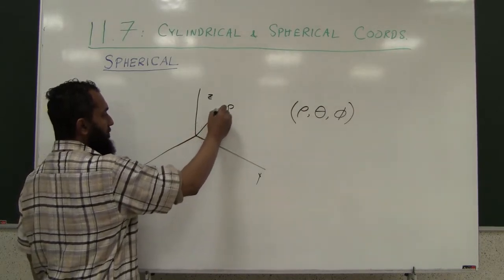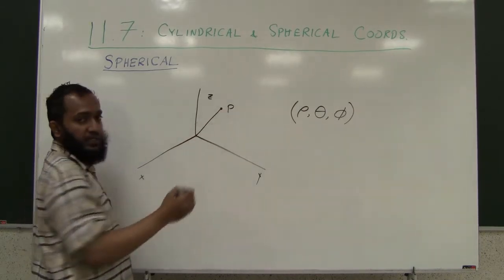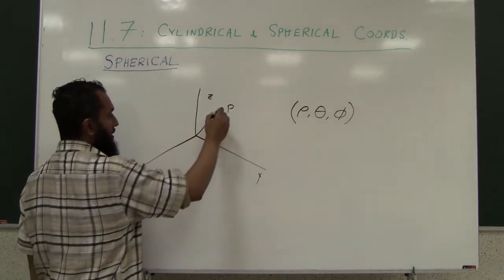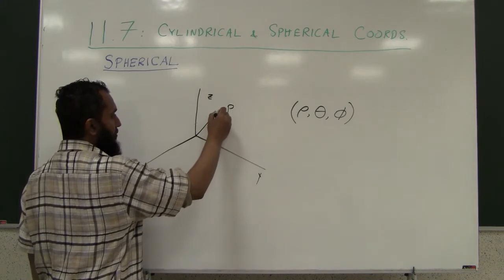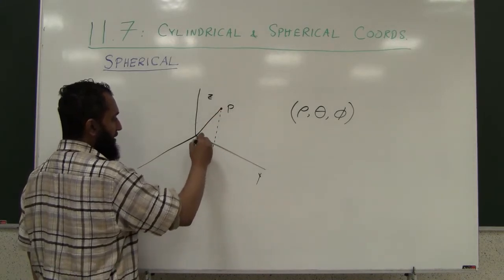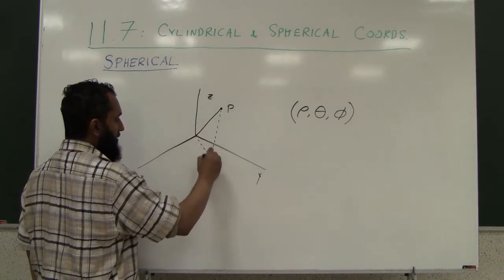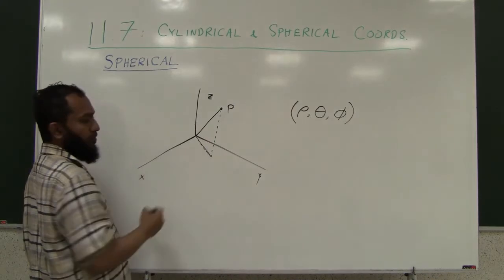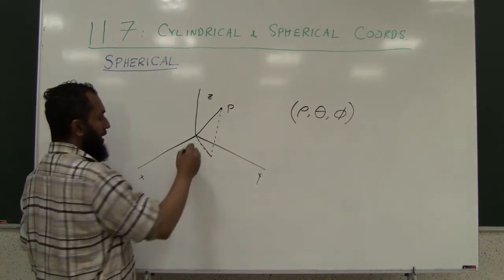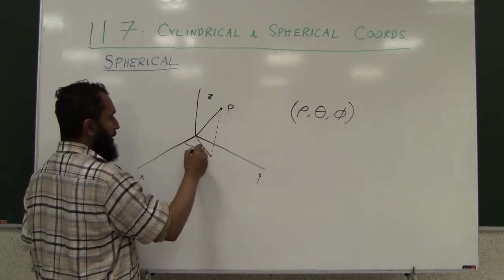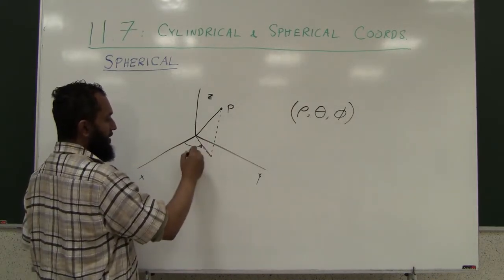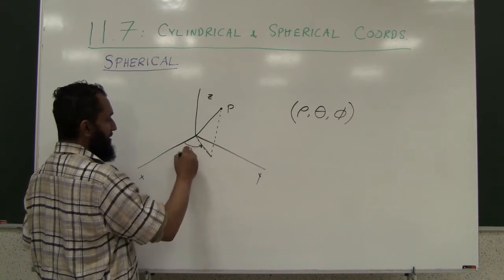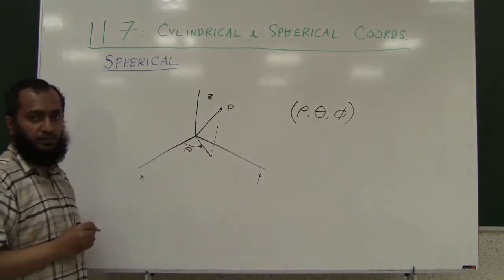Theta is the same one as in the cylindrical system, which uses the polar coordinate system. We project onto the x-y plane, and the angle you have to open from the positive x-axis to that projection line — that's your theta.